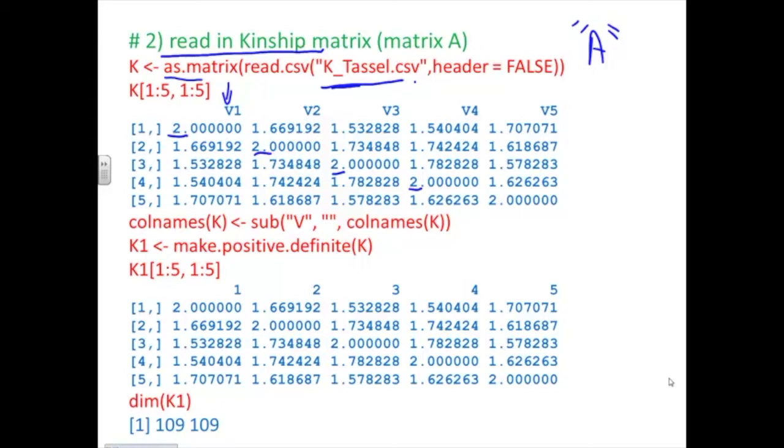It will make it impossible for me to run this matrix in the data set. And so what I'm going to do is I'm going to substitute V for nothing for my column names. I'm also going to make it positive definite. And this will only run if I've used the corp corp package.